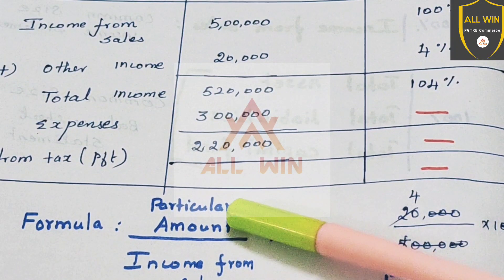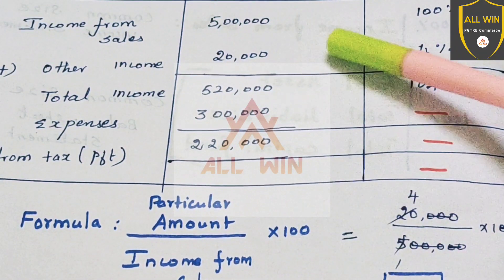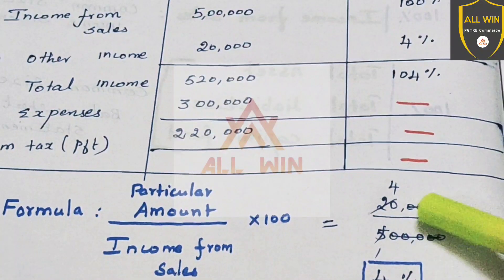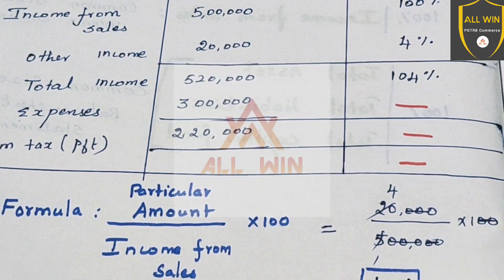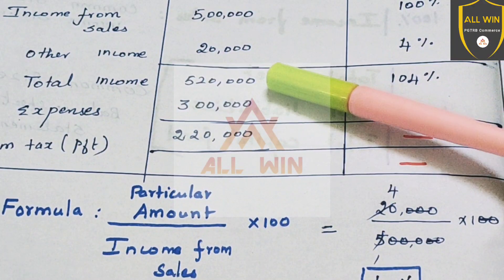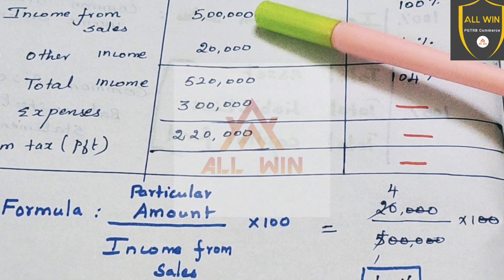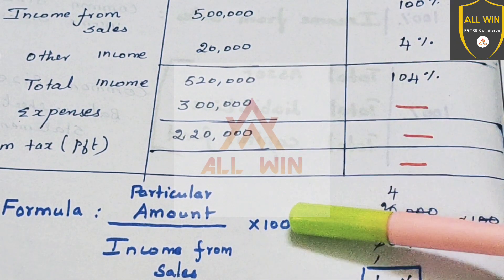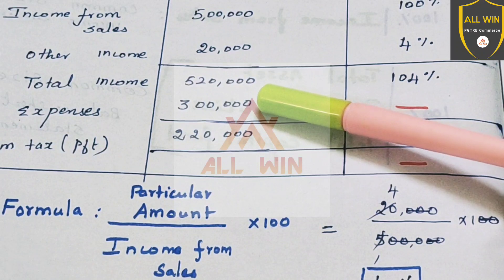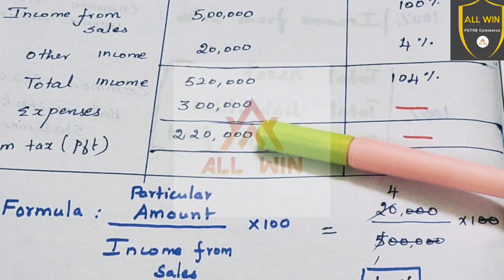For example: 5 lakh divided by 5 lakhs into 100 — the answer is 100 percent. For 5 lakh 20,000 divided by 5 lakhs into 100, the answer is 104. For 3 lakhs divided by 5 lakhs into 100, and 2 lakh 20,000 divided by 5 lakhs into 100, the answer is also calculated accordingly.